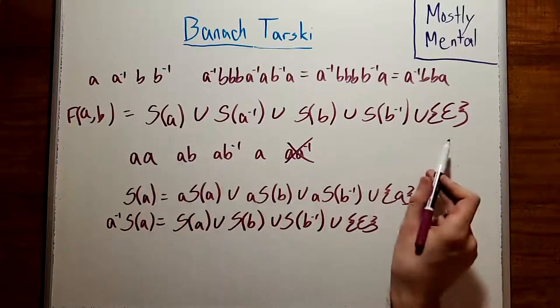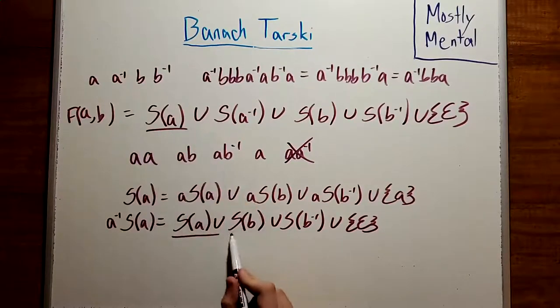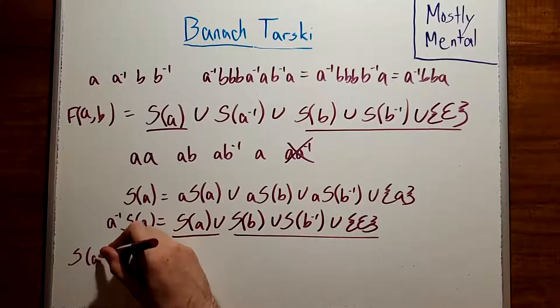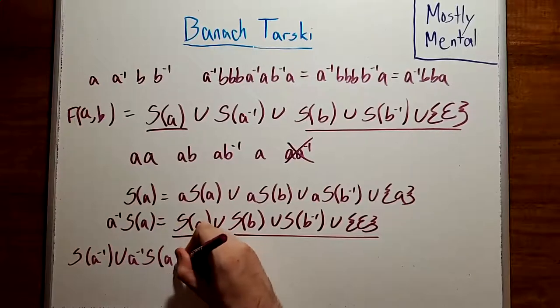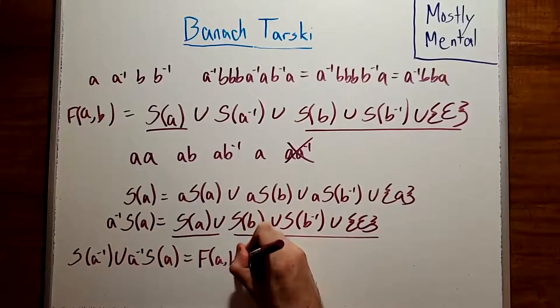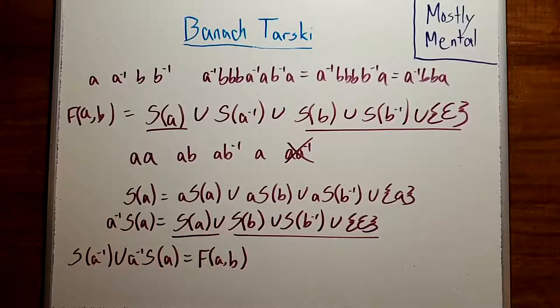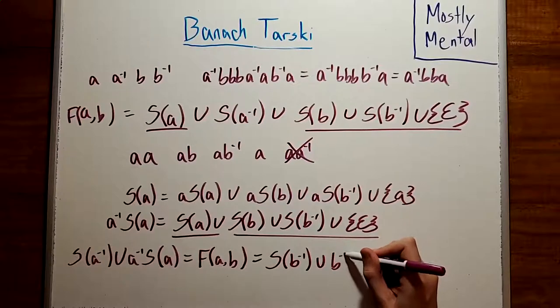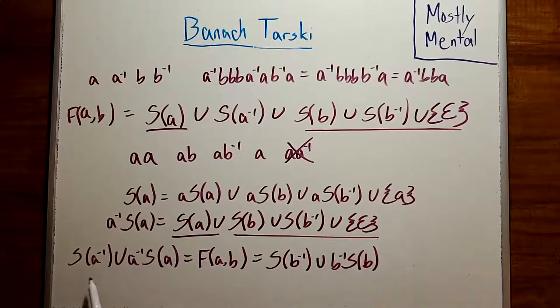Well, that looks a lot like the free group we defined up here. We've got S(A), and we've got all of these terms. All that's missing is this S(A inverse). So, if we add that into both sides, S(A inverse) union A inverse S(A), that's going to give us this plus S(A inverse), which is the free group. Wait, hang on. That means that using only two of our subsets, S(A inverse) and S(A), and a little bit of transformation with this A inverse here, we've managed to create the whole free group. And, we can do the same thing using S(B inverse) and B inverse S(B).